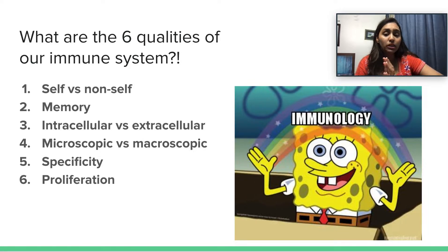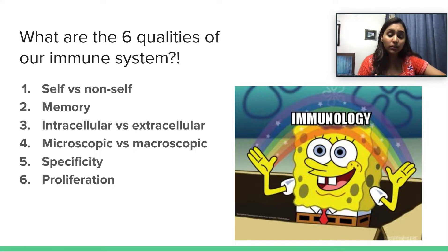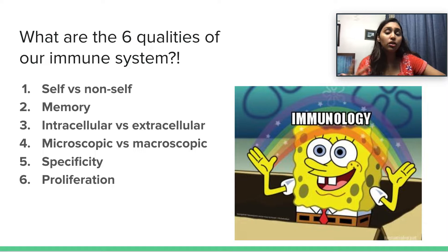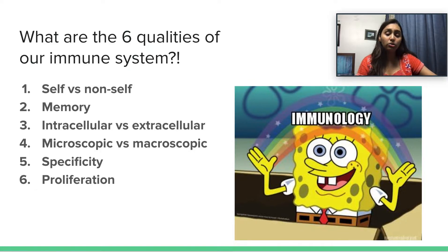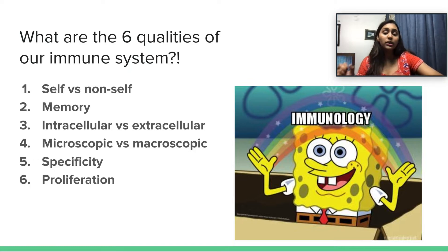What are the six qualities of our immune system? First, it should be able to differentiate self versus non-self, so we don't cause injury to our own cells. Second, it needs to have some sort of memory. Third, it should be able to tell between intracellular versus extracellular organisms — intracellular are viruses, and bacteria can be both. Fourth, it should be able to distinguish between microscopic versus macroscopic organisms, like parasites from bacteria. Fifth, specificity — the more specific it is, the more specific killing mechanisms we'll have against the pathogen. And sixth, proliferation: in times of need, the killing cells are able to proliferate and divide so we can have more cells to help get rid of the infection.